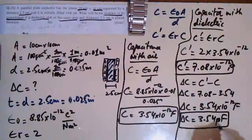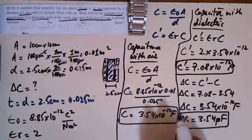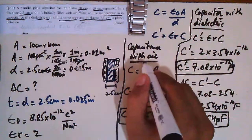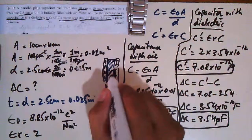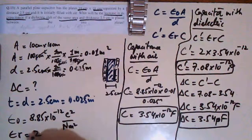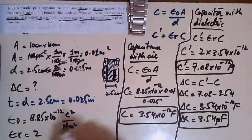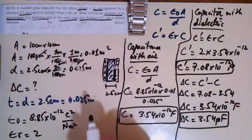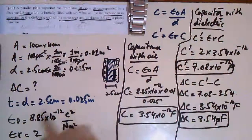This is the change in capacitance when you take a capacitor that had air between its plates and fill it completely with a dielectric having dielectric constant 2, completely filling the capacitor's plates. Thank you very much, I will see you in the next video.